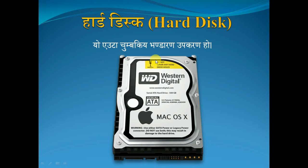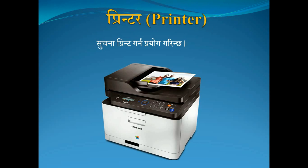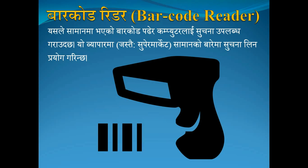The hard disk is a storage device used to store data permanently. The printer is used for printing — it takes data and produces a hard copy on paper. Printers can be black and white or color printers.